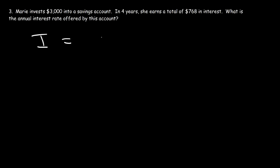So we're going to use the same formula. Now, in this problem, what's I, what's P, what's R, and what's T? The $3,000 is the amount of money she puts into the savings account. So that is the principal. The $768 is the interest, so we can replace I with that number. Now we're looking for the annual interest rate. So we need to find the value of R. T is 4.